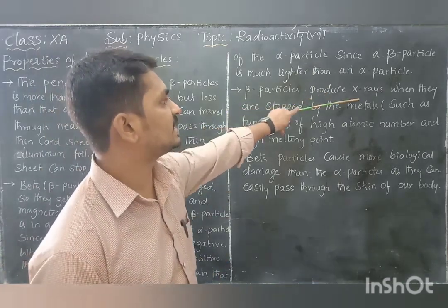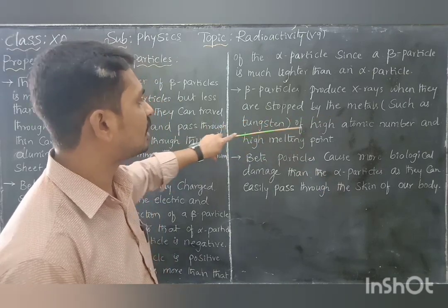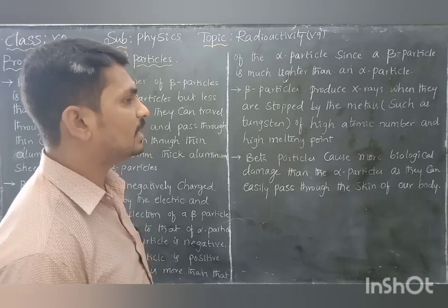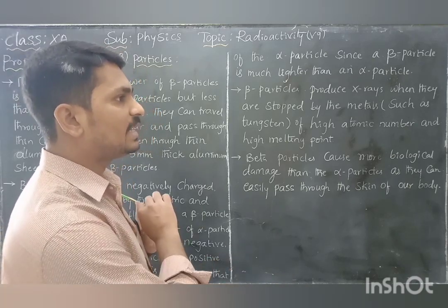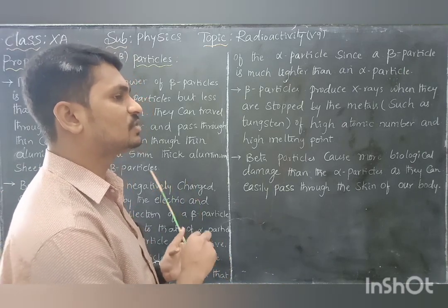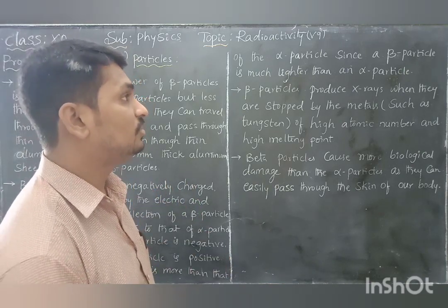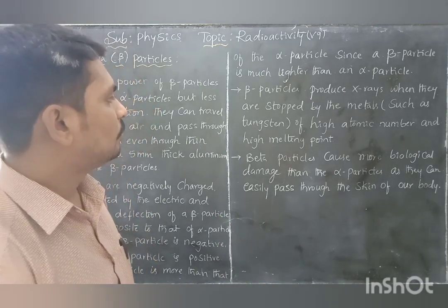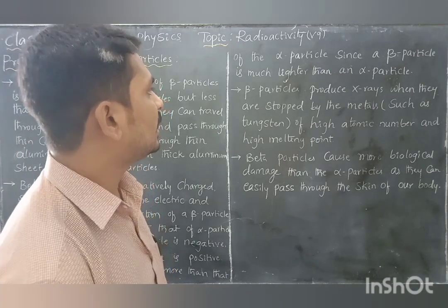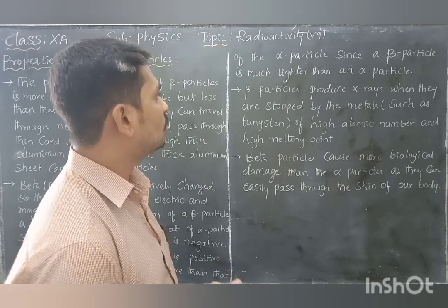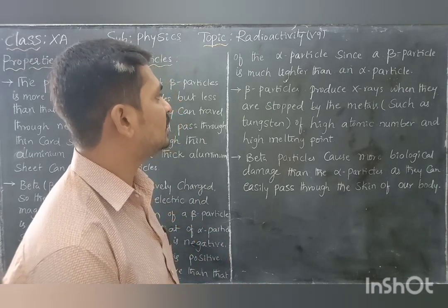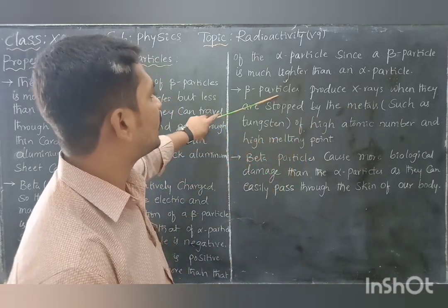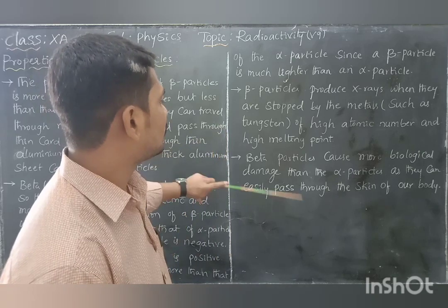Beta particles produce X-rays when they are stopped by a metal of high atomic number and high melting point, such as tungsten. X-rays are very important in many fields, and they can practically be produced with the help of beta particles.